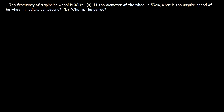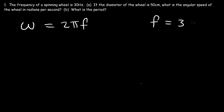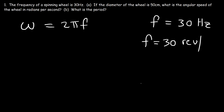What equation do we need to calculate the angular speed? The angular speed omega is equal to 2 pi f. You can also use that equation to calculate the angular velocity. We have the frequency, which is 30 hertz. The frequency represents the number of cycles that occur per unit time — in this case, rotations or revolutions. So if the frequency is 30 hertz, that means the wheel makes 30 revolutions every second.